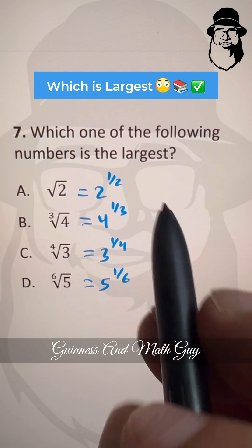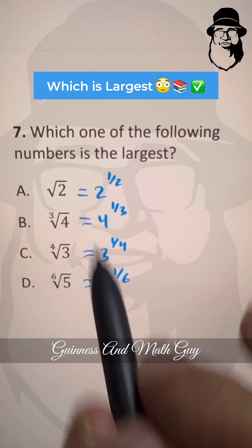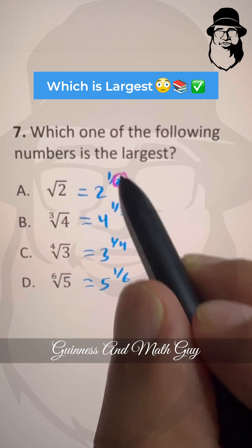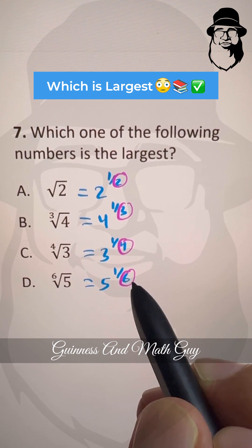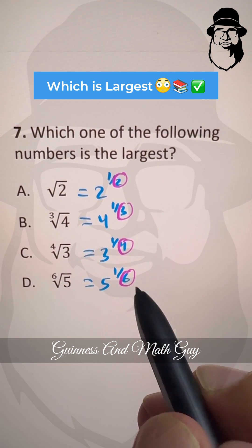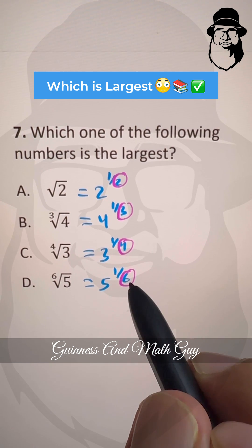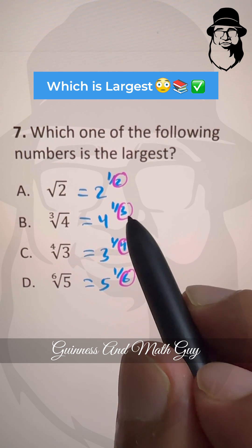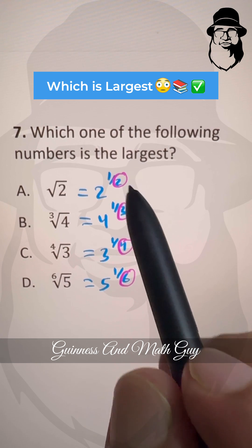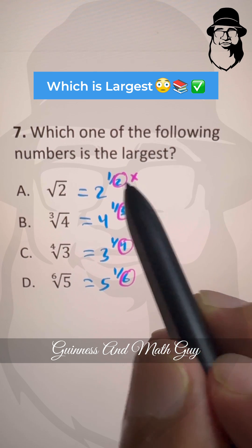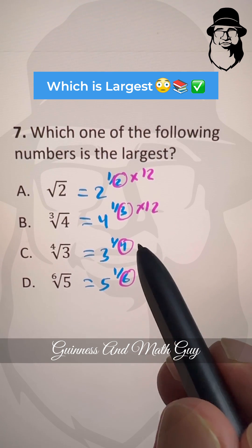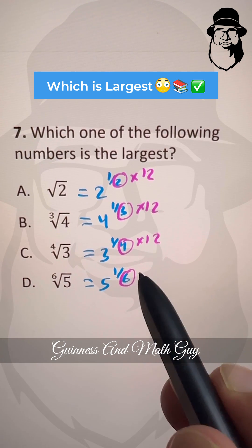Don't be intimidated by these square root signs. Let's take the LCM of 2, 3, 4, and 6. What is the smallest number in the times tables of all of these? 12 is in the 6 times table, 12 is in the 4 times table, 12 is in the 3 times table, and 12 is also in the 2 times table. So let's multiply this 1/2 by 12, this 1/3 by 12, this 1/4 by 12, and 1/6 by 12 also.